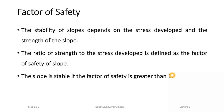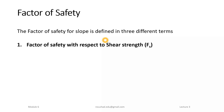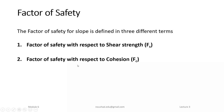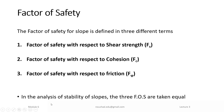The factor of safety for slope stability is defined in three terms: first, factor of safety with respect to shear strength, represented as Fs; second, factor of safety with respect to cohesion, Fc; and third, factor of safety with respect to friction, Fφ. For stability analysis, Fs, Fc, and Fφ are taken as equal.